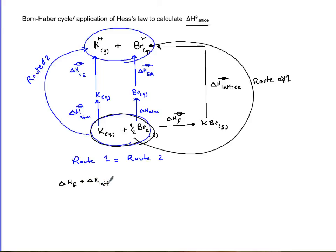Now these two terms should equal the sum of the four blue enthalpies. So they should equal delta H atomization of potassium plus delta H ionization of potassium plus delta H atomization of bromine plus delta H electron affinity of bromine.